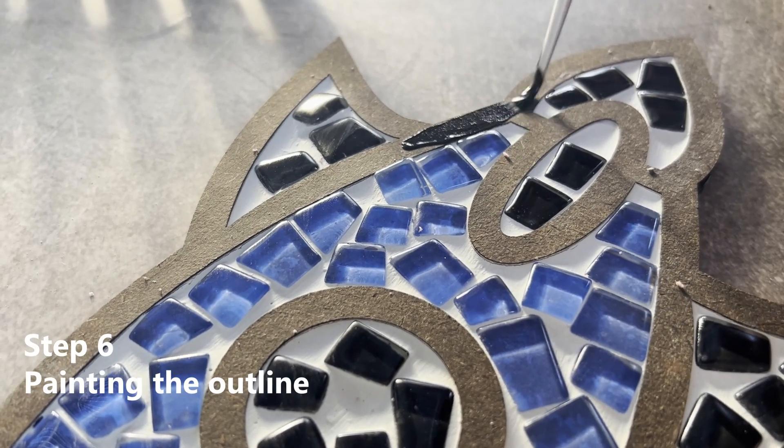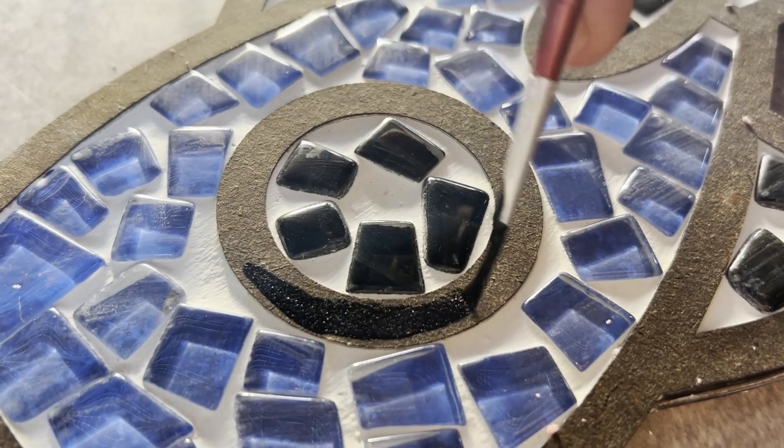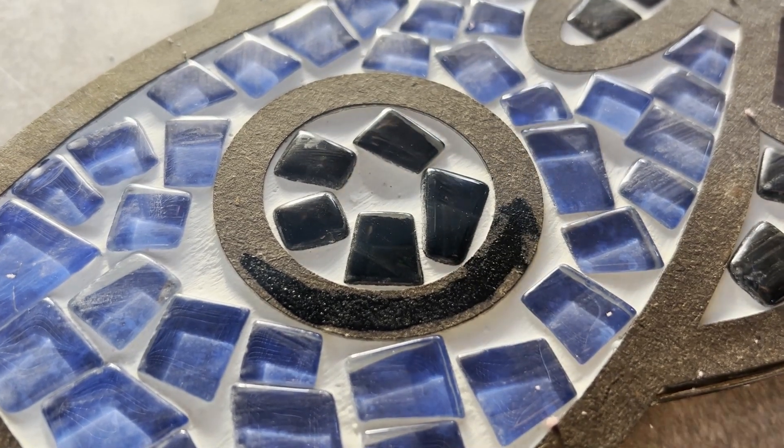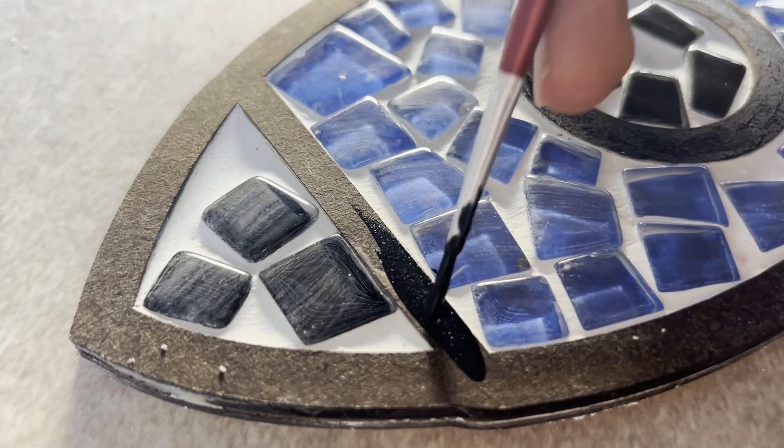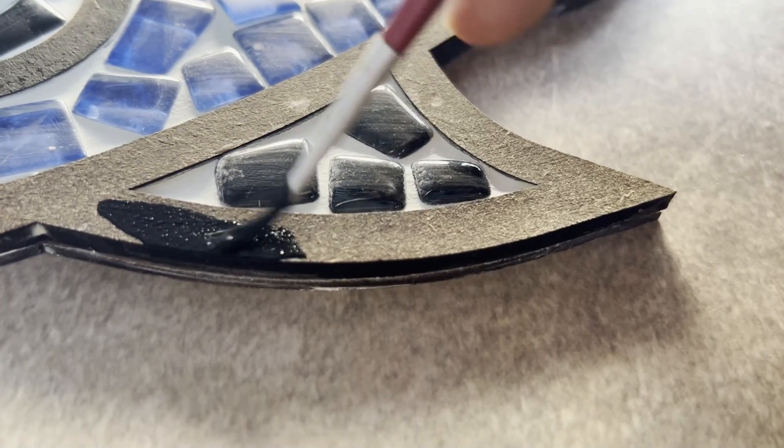Once the grout is applied and cleaned with the sponge, it's time to paint. Paint the outlines with your desired color using the paint brush and let the paint dry thoroughly after the grout has dried for 24 hours.